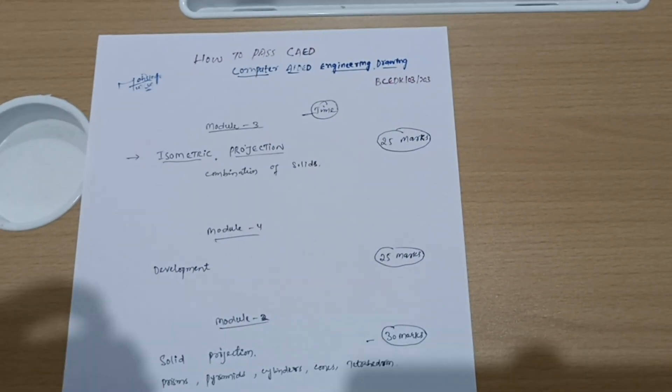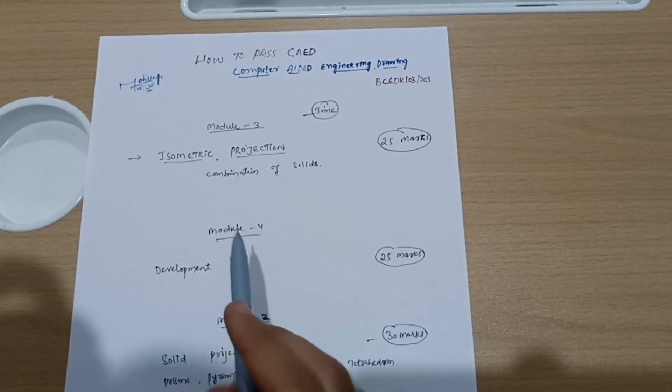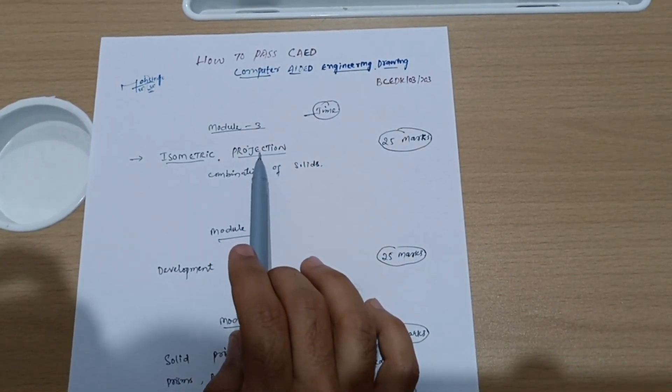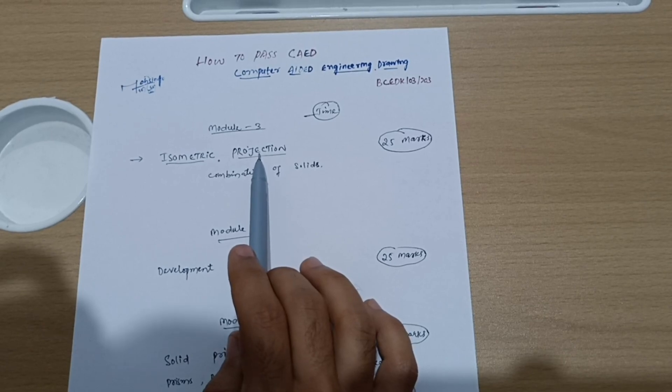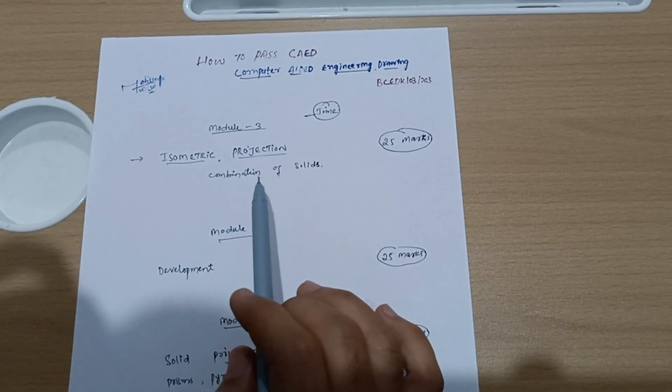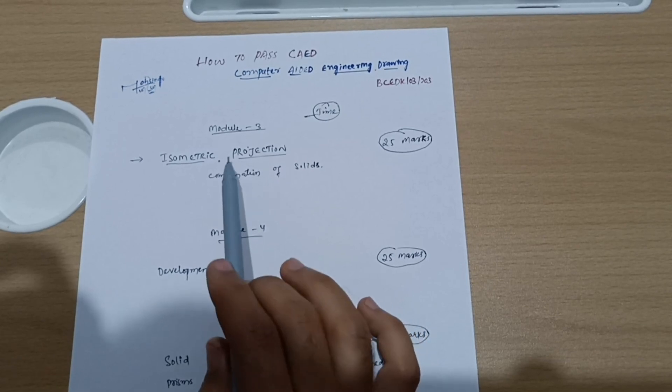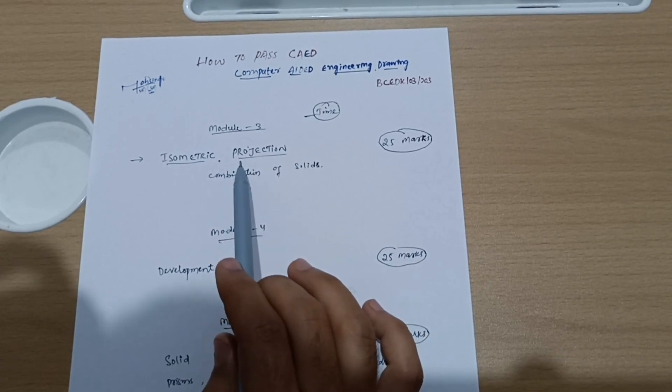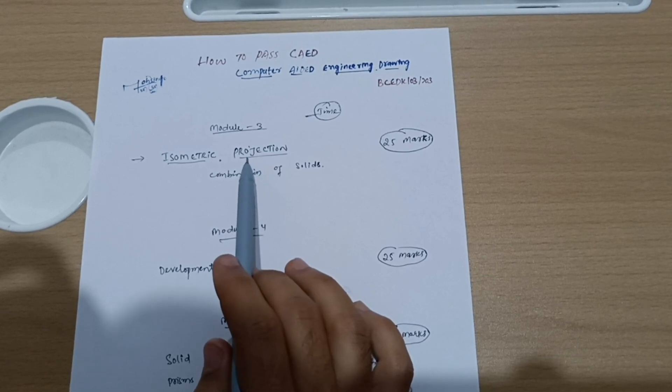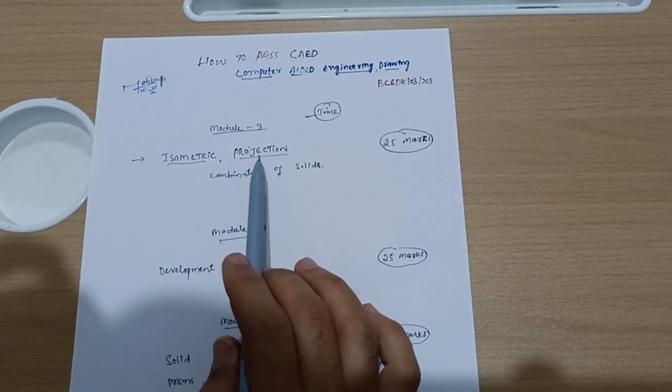If you want to pass only, then you should definitely focus on the isometric projection, which is very simple. As far as other topics are concerned, like projection of plans, points, solid projection, and development - this much is the easier part in which you can easily score 25 marks. You only have to spend two to three minutes for sketching, and in the computer system it also takes two to three minutes.